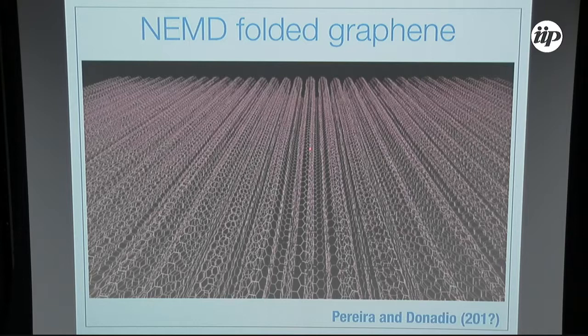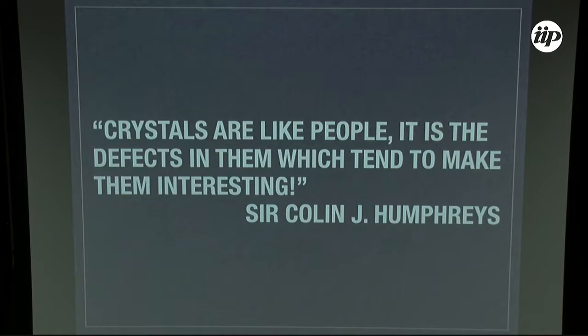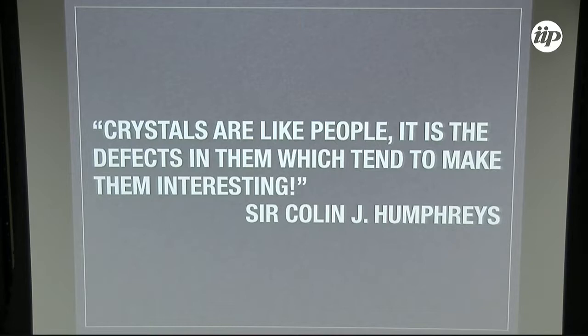How about other 2D carbon materials? We looked at graphene with folds — we take the graphene sheet, compress it so it forms a bulge, replicate that many times, and look at thermal transport in that direction. We see that it does converge with system length much earlier than for flat graphene. There's a sentence from a solid state physics book: 'Crystals are like people — it's the defects that make them interesting.' So let's look at systems with defects.